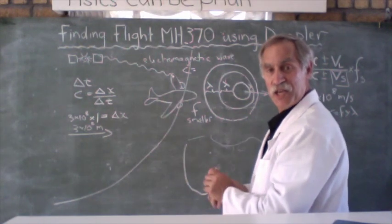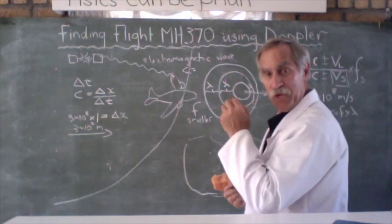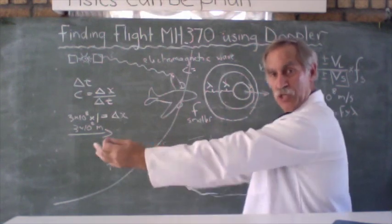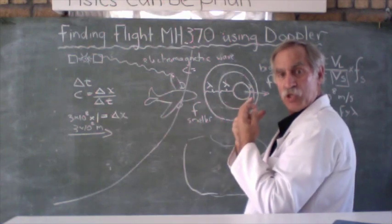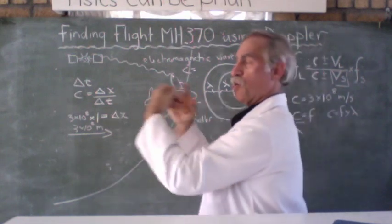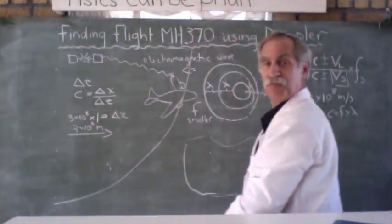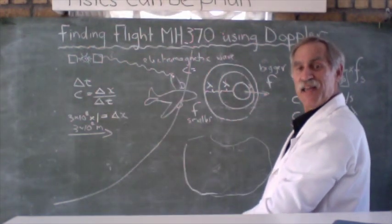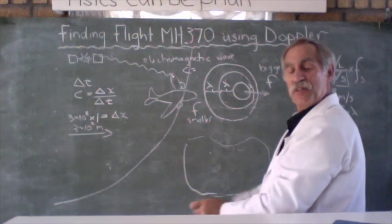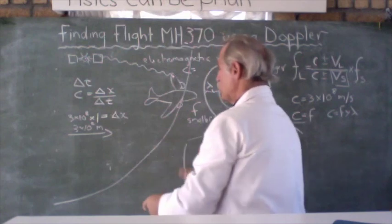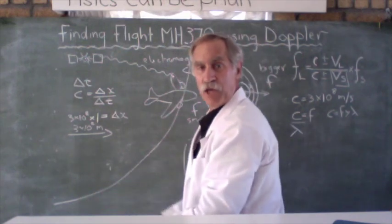So now they could say, simply because the frequency was decreased, and that's the Doppler effect, if something is moving away from the source, then the frequency is lower. And if it's moving towards the source, the frequency is higher. And so they now determined that the plane was flying somewhere on this arc.